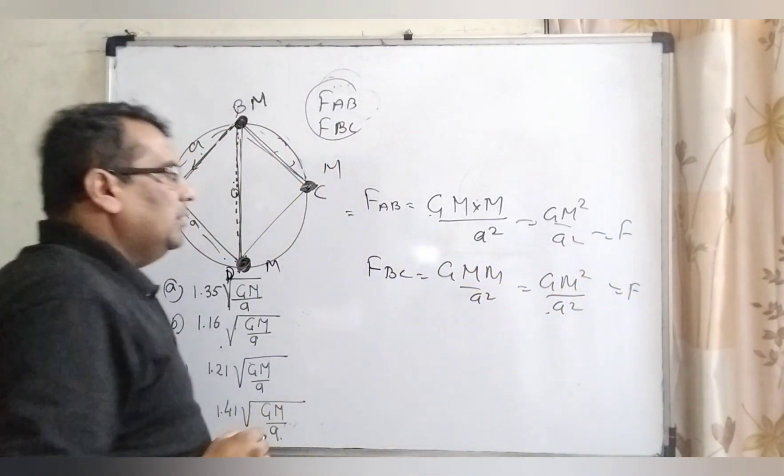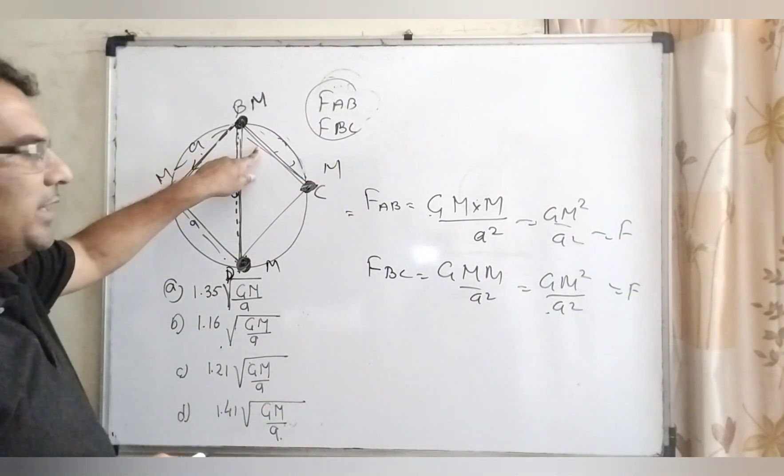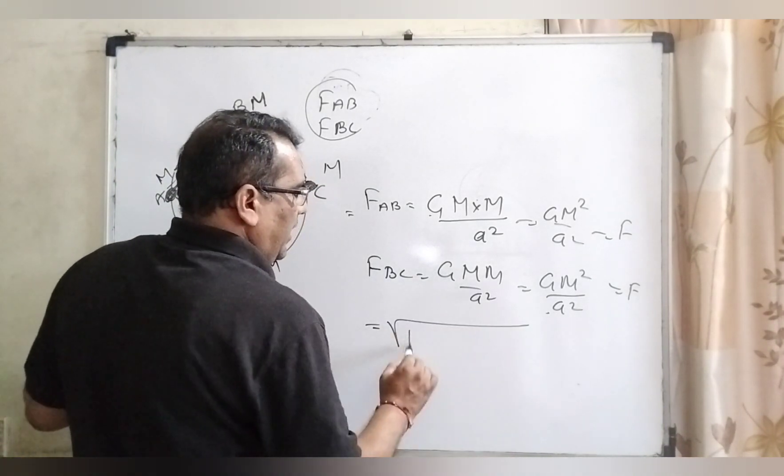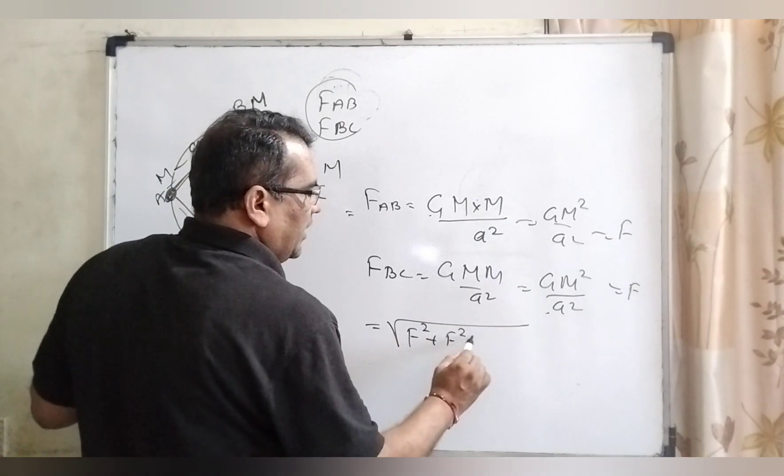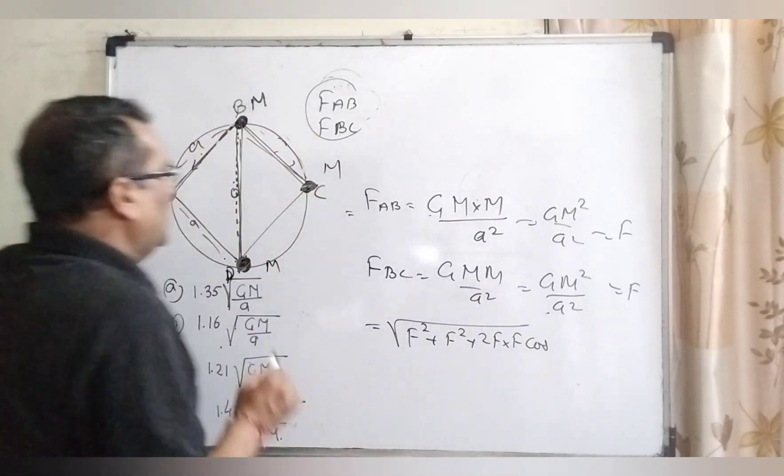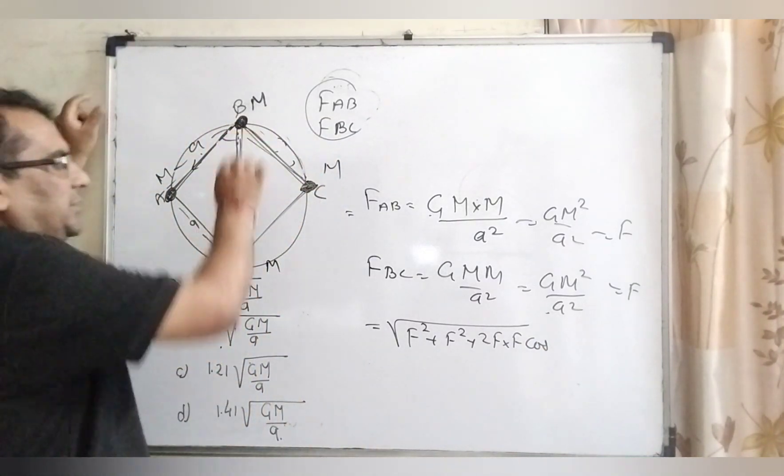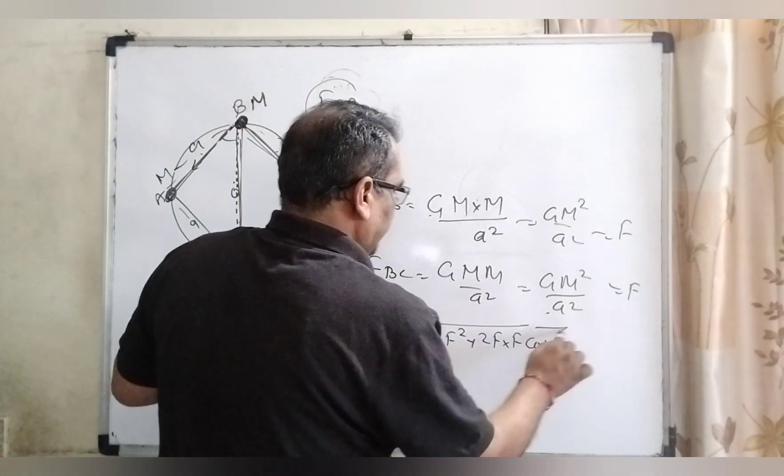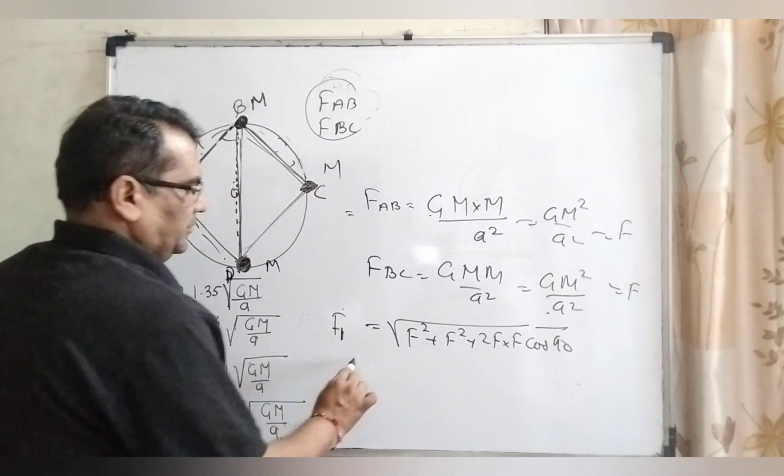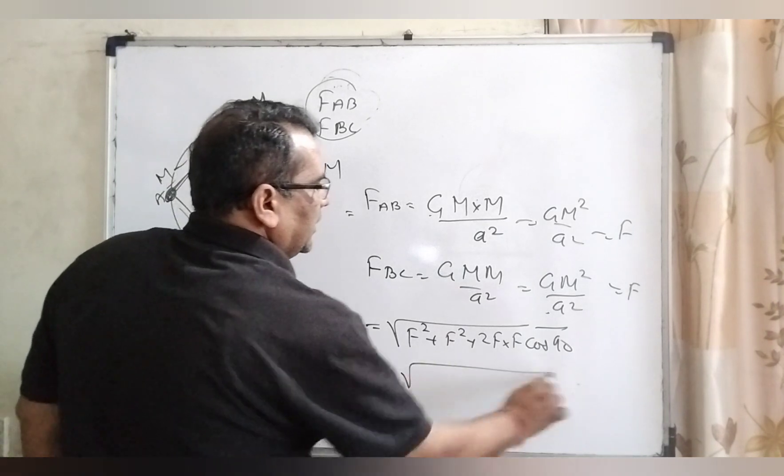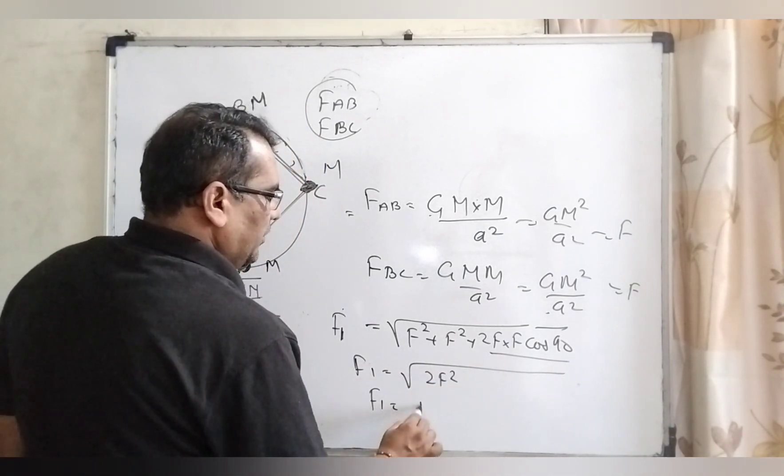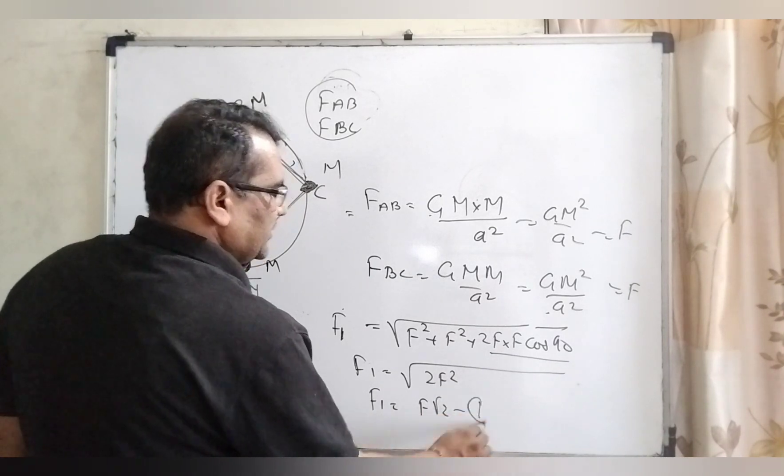Now, using law of parallelogram we get the resultant force. So what is the law of parallelogram? F square, F square, 2F into F and cos. What is the angle between the square? 90 degree. So it is 90 degree. This is the resultant. First, F1. And it is 0, 2F square means F1 equal to F root 2. It is the first equation.